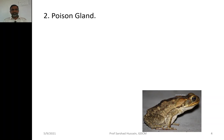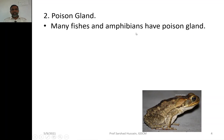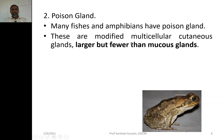The second gland is the poison gland. Poison glands are present in many fishes and amphibians. These are modified multicellular cutaneous glands — cutaneous because they are glands of the skin. They are large but fewer in number than mucous glands. This is the key difference: mucous glands are small and numerous, while poison glands are large and few.